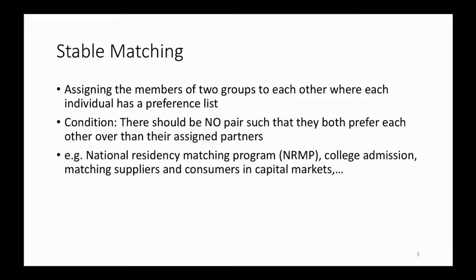Stable matching is the process of assigning the members of two groups to each other one by one, where each person has a preference list. This preference list shows how a person values each person of the other group. The assignment should satisfy one condition: there should be no pair such that they prefer each other over their assigned partners. Stable matching is used in many applications, for example in national residency matching program where a group of medical students are matched to residency programs.